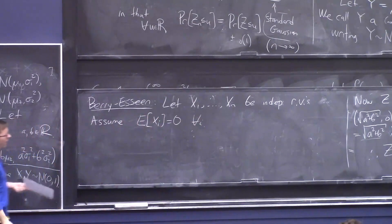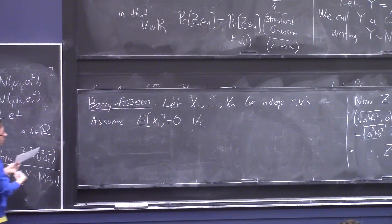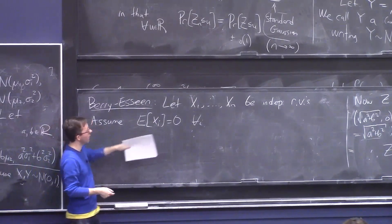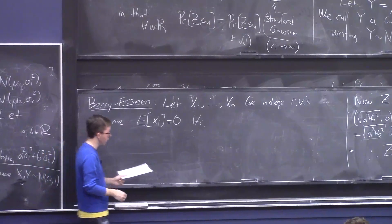This is basically without loss of generality because we're going to be interested in the sum of these random variables. So you can just translate them all, center them all to have mean zero, and that just adds a constant to your sum, which is easy to handle.